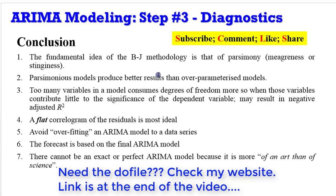So again, in conclusion, parsimony is a watchword for the Box-Jenkins methodology. Do not include redundant variables in the model. Remember, a flat correlogram of the residual is the most ideal. You must avoid overfitting an ARIMA model to a data series, and always know that the forecast must be based on the final chosen ARIMA model. Lastly, always remember that there can never be an exact or perfect ARIMA model because ARIMA modeling is more of an art than of science.